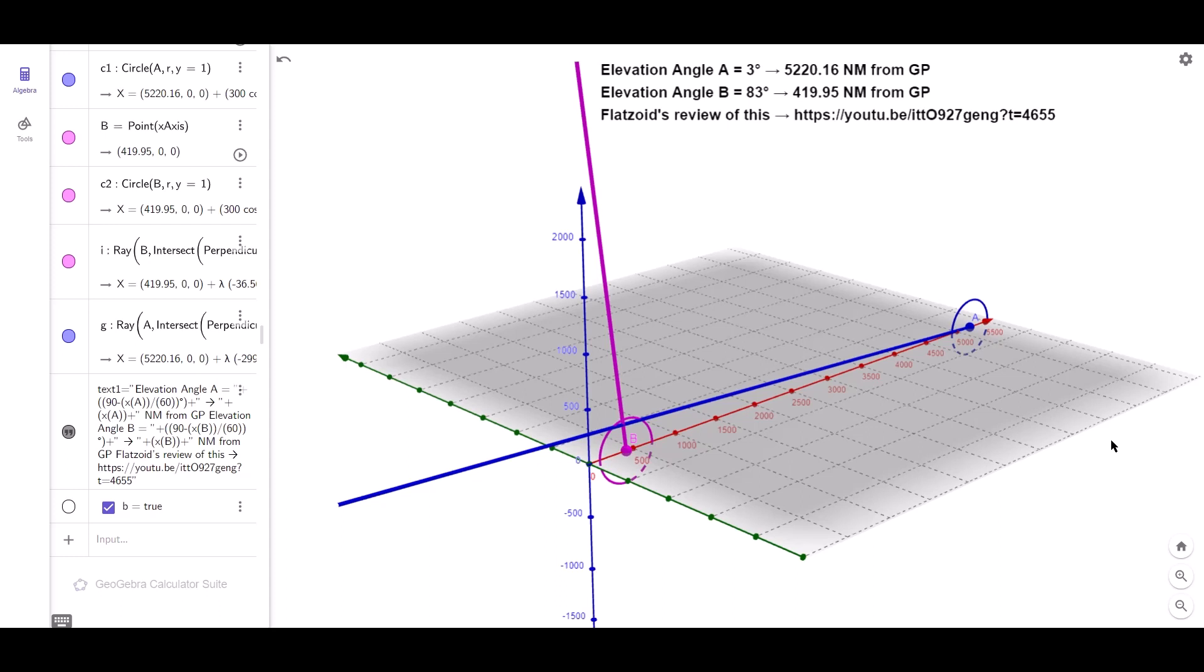And what did we learn from the lamp pole presentation? If you have an altitude angle and a distance from the GP, then you can work out the height of the lamp, or in this case, Polaris.